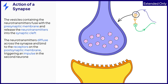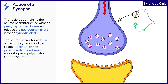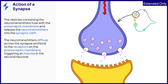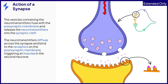The way that the synapse works is that the electrical impulse travels along neuron one. When it reaches the end, it triggers the vesicles containing the neurotransmitters to fuse with the presynaptic membrane, releasing the neurotransmitters into the synaptic cleft.